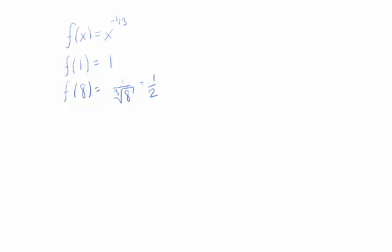Now between one and eight, this function is continuous and it's differentiable, so the mean value theorem tells us that there exists some c between one and eight with the following property: